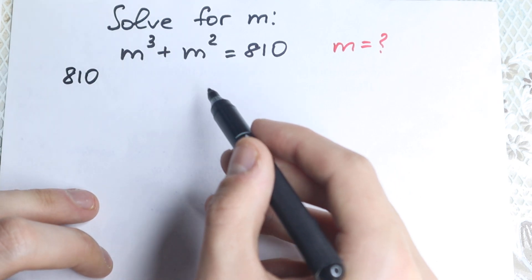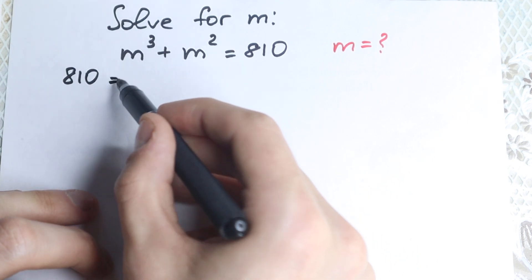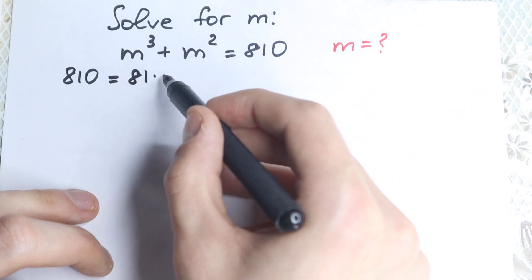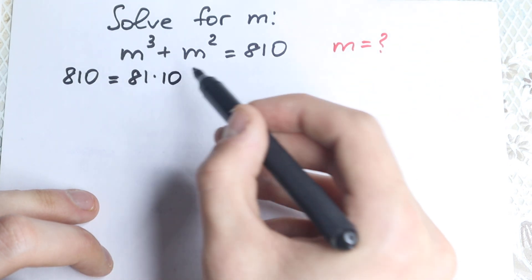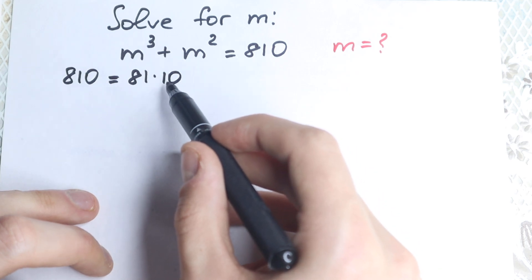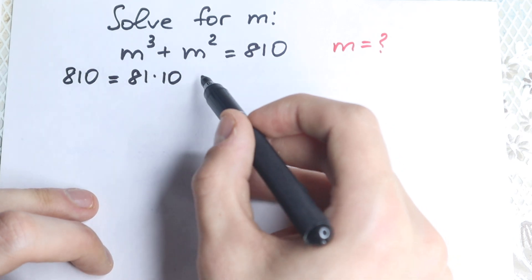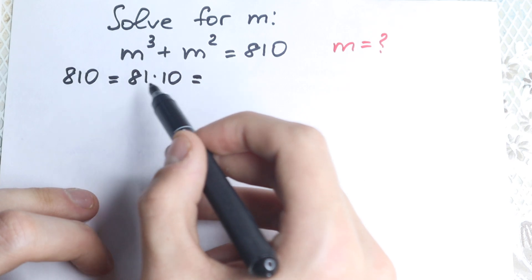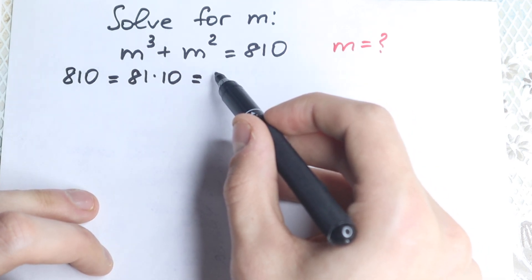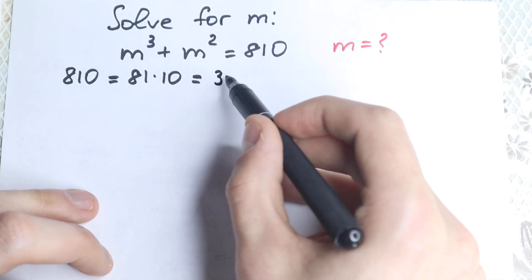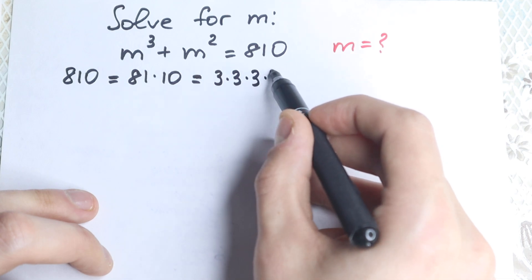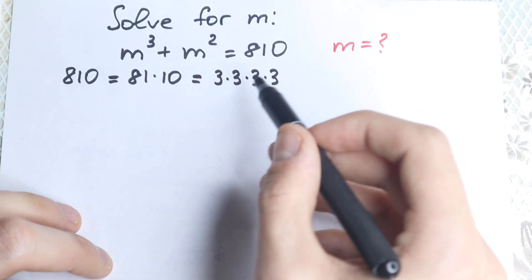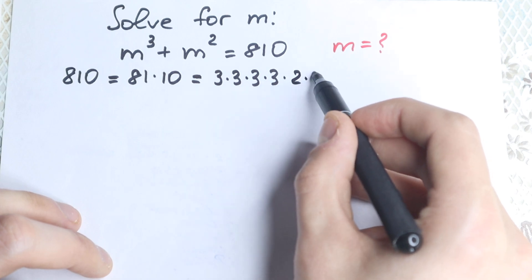We can easily write 810 as a product: 810 equals 81 times 10. We know that 10 equals 2 times 5. And moreover, we know that 81 equals 3 to the fourth power — so we have 3 times 3 times 3 times 3, and 10 equals 2 times 5.